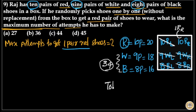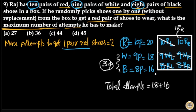Total attempts equals 18 white shoes plus 16 black shoes plus 10 left foot red shoes plus 1 right foot red shoe. That gives 34 plus 11, which equals 45. So the total number of attempts is option D: 45.